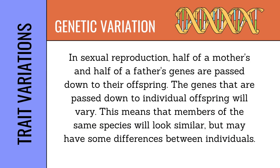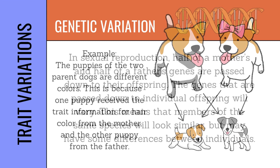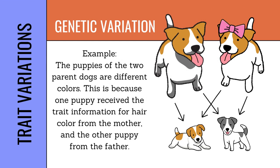In sexual reproduction, half of a mother's and half of a father's genes are passed down to their offspring. The genes passed down to individual offspring will vary, meaning members of the same species will look similar but may have some differences. For example, the puppies of two parent dogs may be different colors because one puppy received the trait information for hair color from the mother and the other from the father.